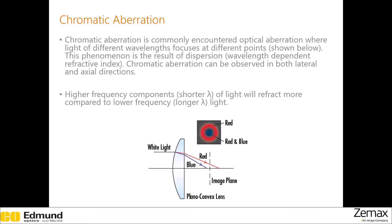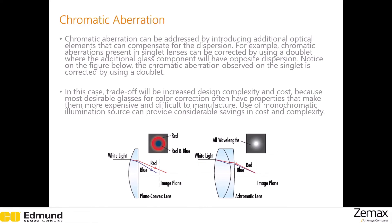The last aberration that we will discuss is chromatic aberration. It is due to the dispersion of light, where the refractive index depends on the wavelength of light being used. As you can see in this figure, blue and red lights have different on-axis focus — this is chromatic aberration. You can compensate for dispersion by introducing another optical element with opposite dispersion. The chromatic aberration in singlets can be corrected by using a doublet, where the additional glass component has opposite dispersion — one is crown and the other is flint. In this figure, the blue and red rays have the same focus, so there is no chromatic aberration.